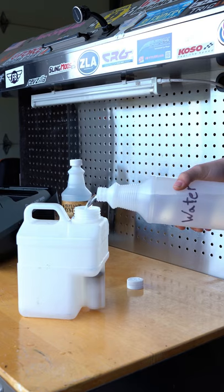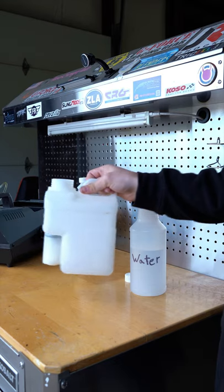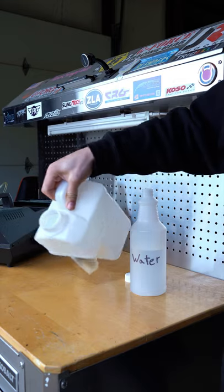Pour distilled water into your fog machine tank. Swirl the water around inside the tank and then dump it out.